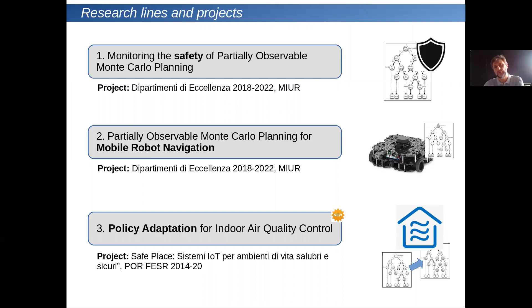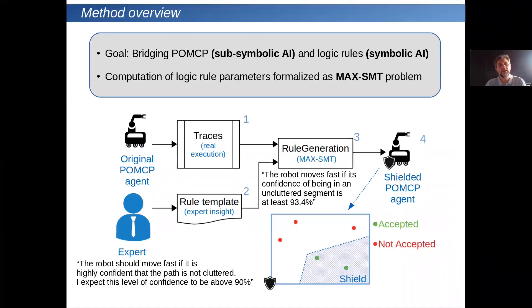I'm going to present some results about the first two projects. The goal of the first research is bridging POMCP — partially observable Monte Carlo planning, a sub-symbolic AI method — and logic rules, which is instead a symbolic AI method.